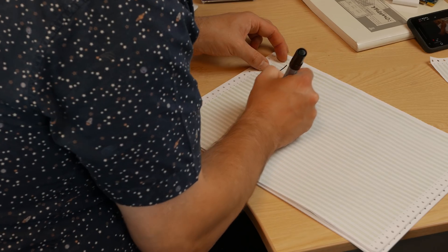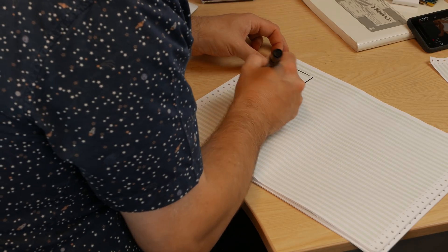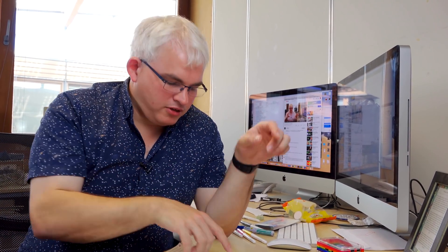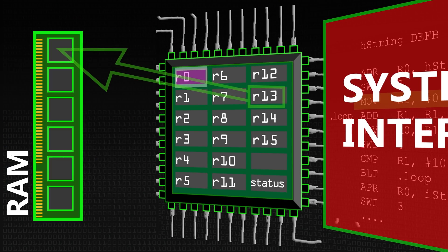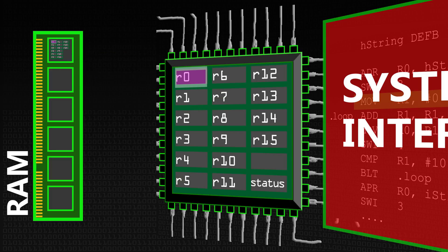We have a register pointing to the process control block, and we can use R13 for this. On the ARM chip, to make interrupts fast, it actually has registers that can overlay other registers — R13 here is the register that exists in supervisor mode inside the CPU, not the same register used in user mode. The first thing we do is store multiple registers into memory at the address pointed to by R13, dumping registers R0 through R14 into RAM that's been allocated as part of the operating system.